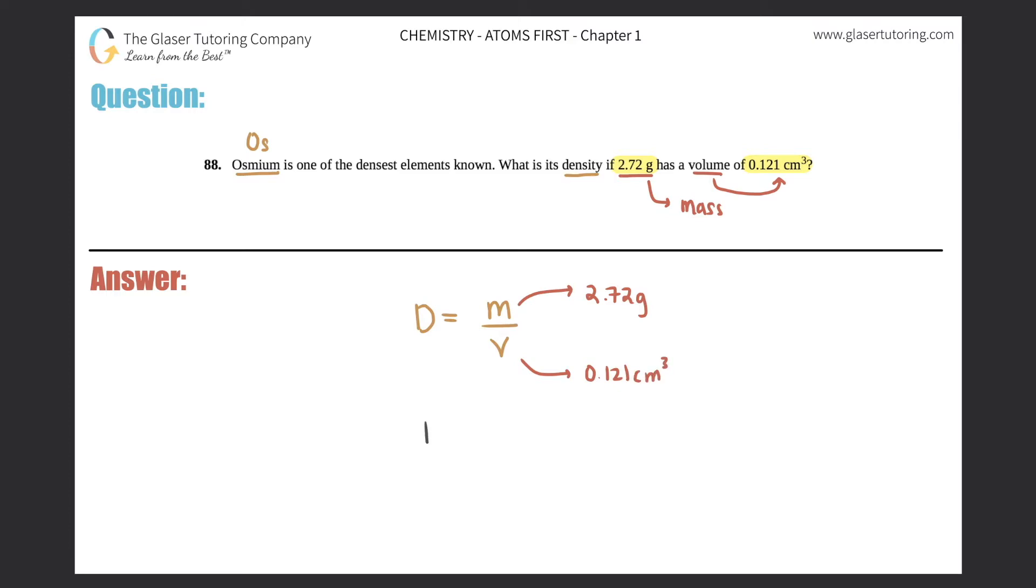So I'm just going to plug those numbers in. Density equals 2.72 divided by 0.121.